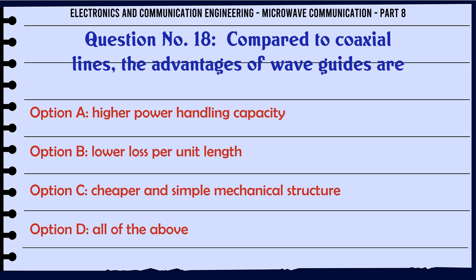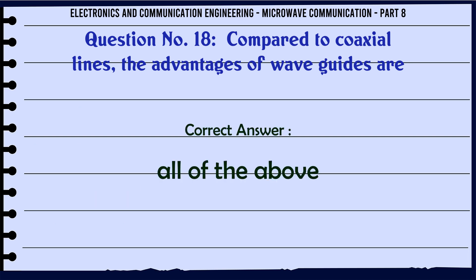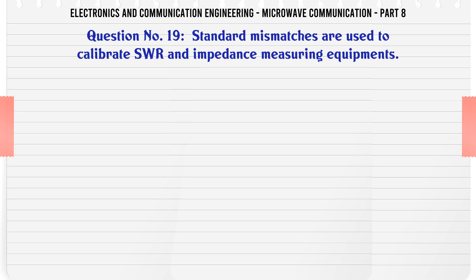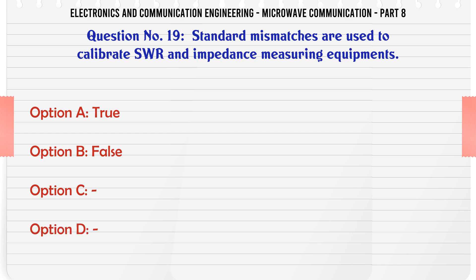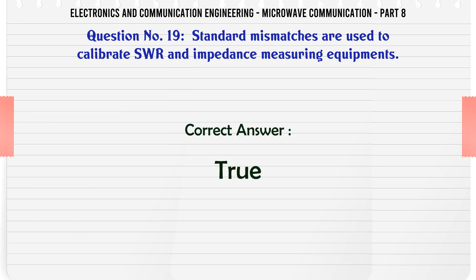Compared to coaxial lines, the advantages of waveguides are — A. Higher power handling capacity, B. Lower loss per unit length, C. Cheaper and simpler mechanical structure, D. All of the above. The correct answer is all of the above. Standard mismatches are used to calibrate SWR and impedance measuring equipment — A. True, B. False. The correct answer is True.